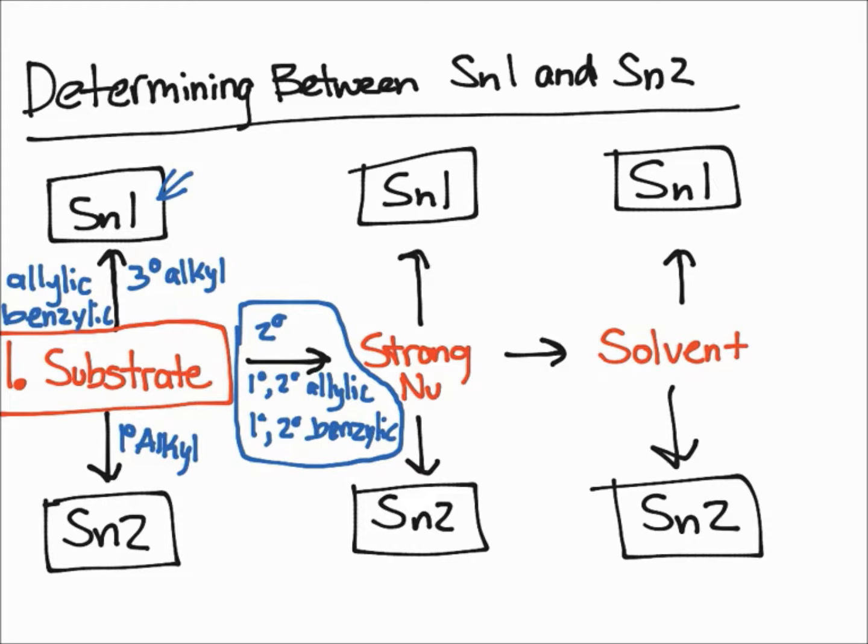So if you have a strong nucleophile, which is going to be an anionic nucleophile—and I just abbreviated nucleophile as Nu—if you have an anionic nucleophile, it's going to be strong and it's going to undergo an SN2 reaction.